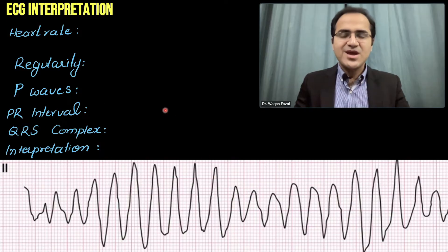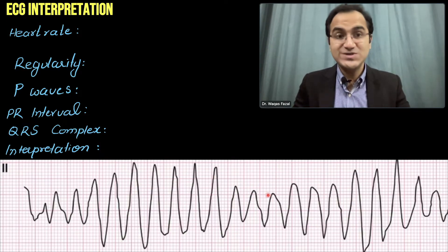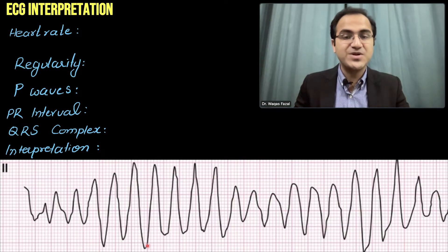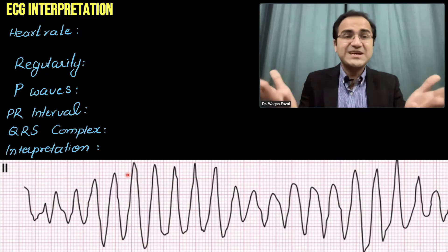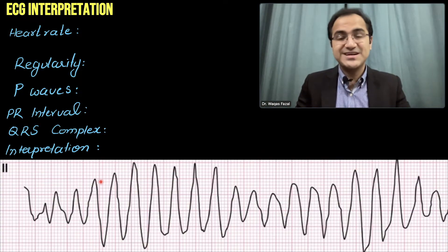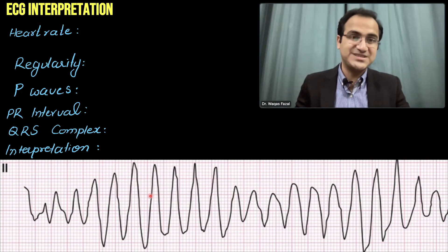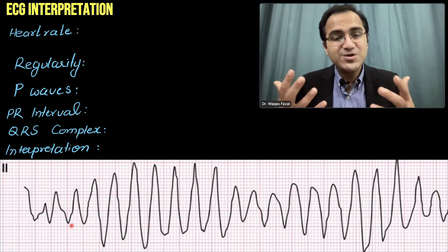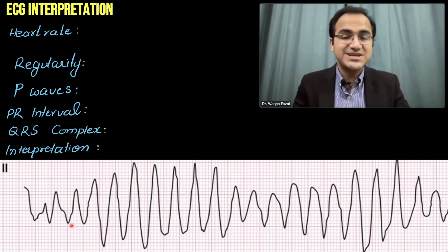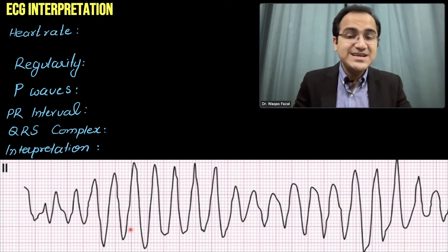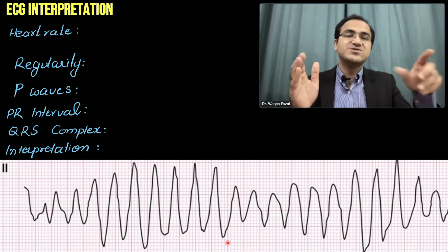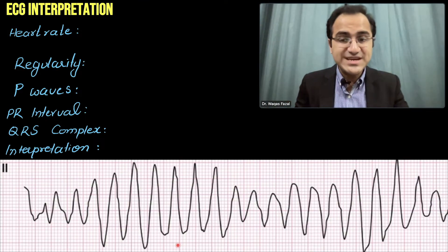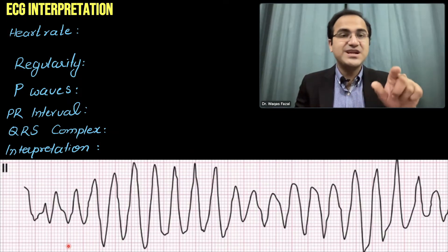Looking at this ECG showing torsades de pointes — these are the pointed ends and these are the round ends, demonstrating the twisting around the points. To calculate the heart rate: the atrial rate cannot be calculated because there are no P waves visible. For the ventricular rate, we use the six-second method. We count 30 large boxes and the number of QRS complexes within them, then multiply. Since we have a short strip, we will take 15 large boxes and multiply by two.